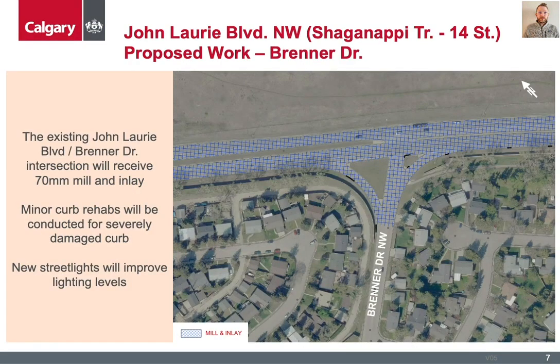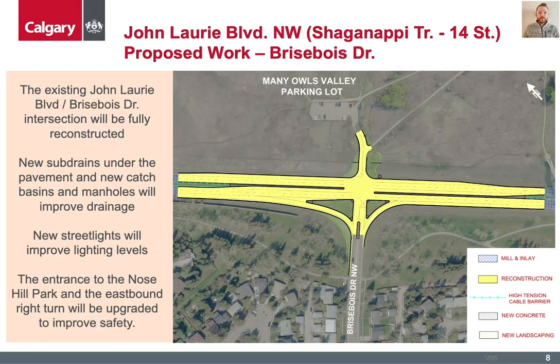Rehab of the Brenner Drive and John Lurie Boulevard intersection will be completed through mill and inlay of the intersection to the south limit shown on this image, as well as the removal and replacement of severely damaged curb and gutter. The intersection will also receive upgraded lighting to improve lighting levels and the safety of the intersection. The largest section of rehab along the project will occur at the Brisewa Drive and John Lurie Boulevard intersection. For those that use this corridor on a regular basis, you will likely know that this section of John Lurie Boulevard is in the worst condition. Due to the existing condition of the pavement and the underlying cause of deterioration, mill and inlay was not a suitable option for rehab, unlike the other areas along the project.